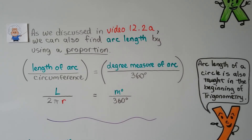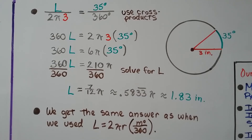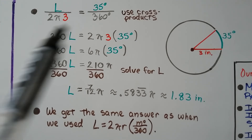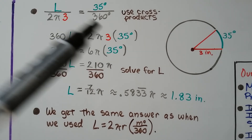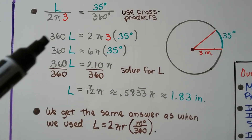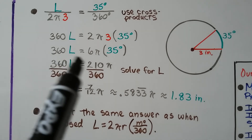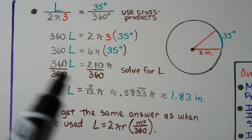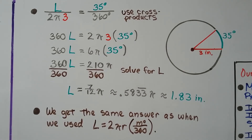You're also going to learn this in the beginning of trigonometry. Using the given information from our previous example — radius of 3 and 35 degrees for the degree measure of the arc — we put that into our proportion and use cross products. We get 360L = 2π × 3 × 35. That gives us 210π on this side. Dividing both sides by 360, we get L = 7/12 π, just like before — approximately 1.83 inches. We get the same answer as when we used L = 2πr × (m/360), just using a proportion instead.